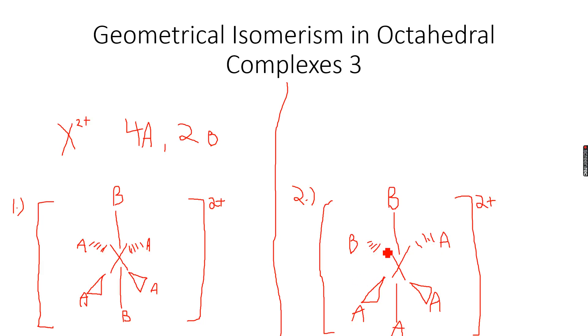The bond angle between the B's is 90 degrees, 180 degrees over here. The angle between the B's is 90 degrees over here. So this is it for isomerism in octahedral complexes. Now let's move on to tetrahedral complexes.